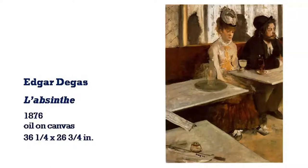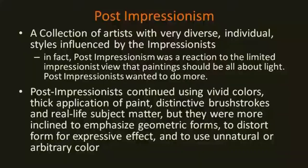People like Degas, Manet, and others were not only inventing new methods of dealing with the shifting character of light, but they were also looking for new subject matters, and composition became immensely important for the Impressionist painters. So Post-Impressionism is, in a sense, a continuation of Impressionism, but at the same time it is also slightly distinct from Impressionism.